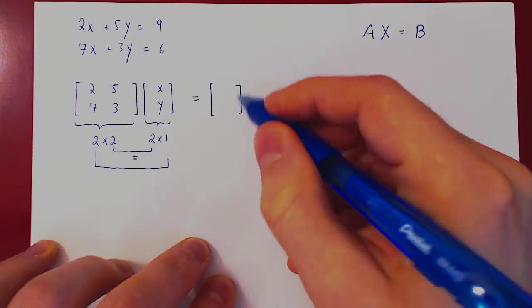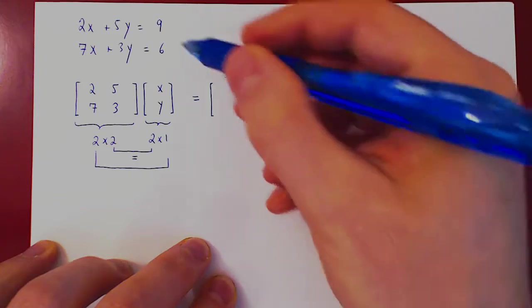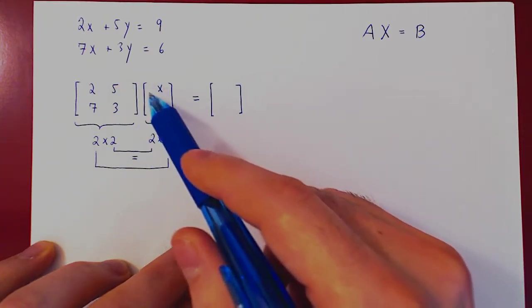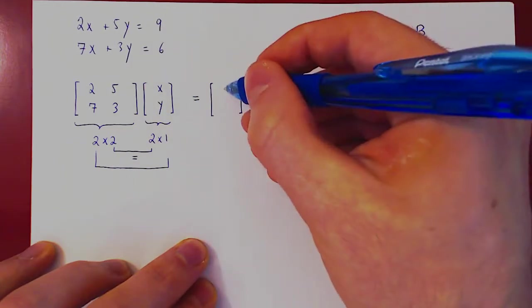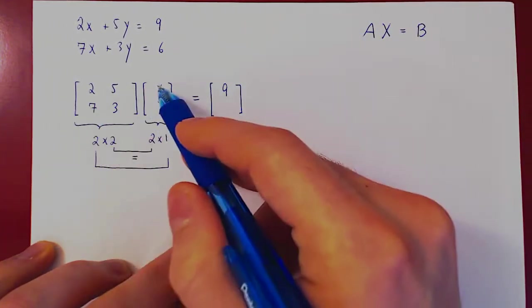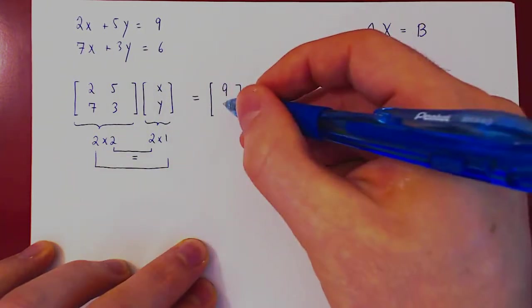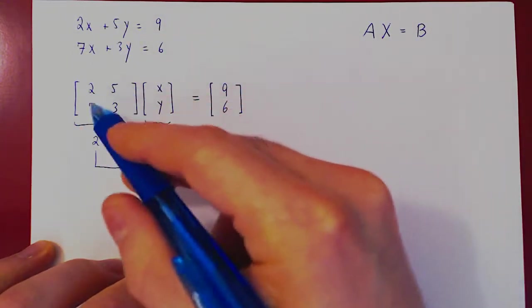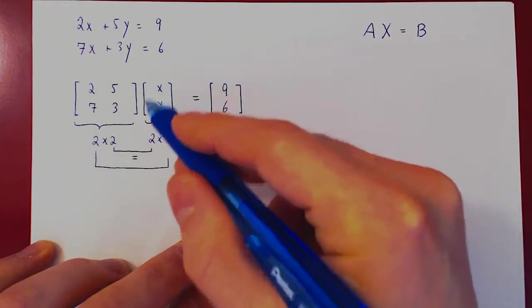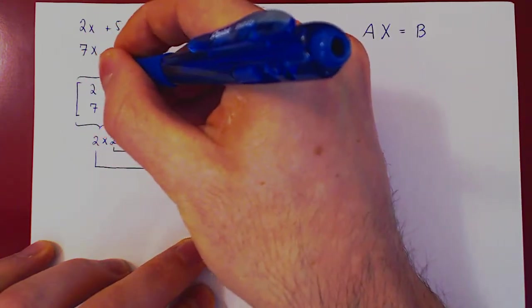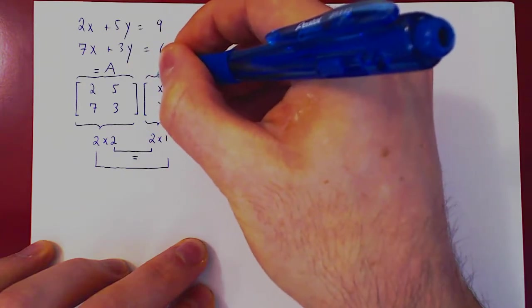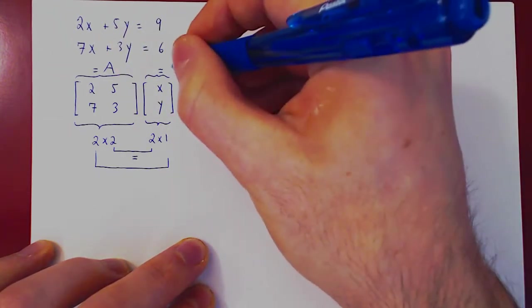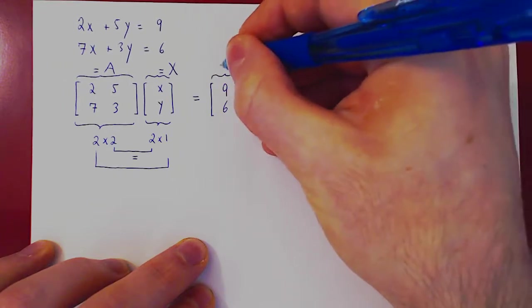And now, let's see how we have to choose our matrix B so as to have an equivalency with the linear systems. So let's multiply this out. We have 2X plus 5Y, but that must equal 9. Second entry, we have 7X plus 3Y, but that must equal 6. And there you go. For example, we now have rewritten the linear system into an equation with three matrices. A times X equals B.